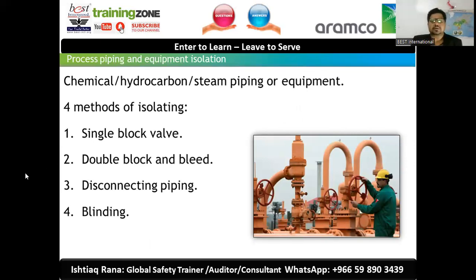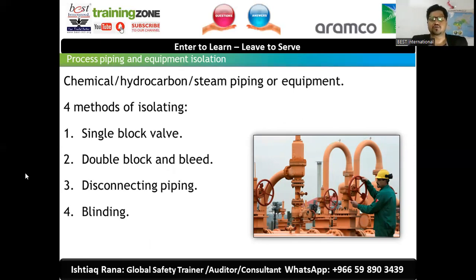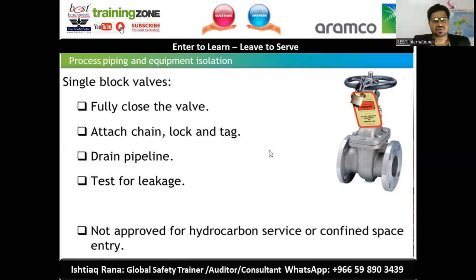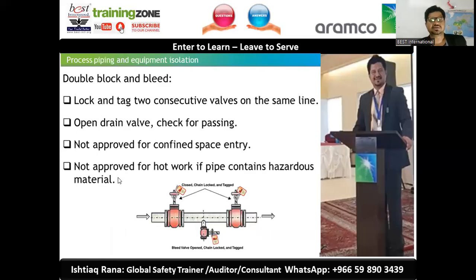For process piping and equipment isolation — especially for chemical and hydrocarbon service — there are four methods per Saudi Aramco guidelines: single block valve, double block and bleed, disconnecting piping, and blinding. The safest and best method, especially for confined spaces, is disconnecting piping and blinding. Single block valve requires: fully close the valve, attach chain lock and tag, drain the pipeline, and test for leakage — but it is NOT approved for hydrocarbon service or confined space entry.